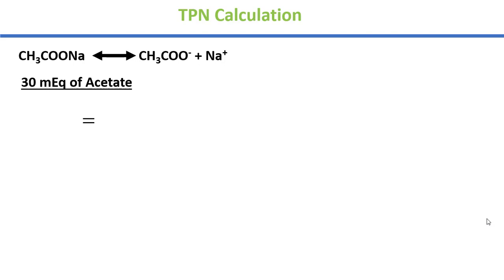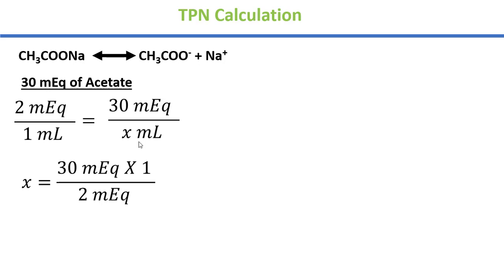Sawal mein humse kaha gaya ki hamein 30 milliequivalents of acetate ki zaroorat hai. Aur jo solution humare paas mojood hain, usmein 2 milliequivalents per mL mojood hain. To equation ko is tarah se banate hain. Hamare paas 2 milliequivalents per 1 mL is equal to 30 milliequivalents per x mL. Hamein yahan par mL maloom karna hai kitne mL hain. Now cross multiply and x will be 30 multiplied by 1 divided by 2 and then calculate the answer is that x is equal to 15 mL.